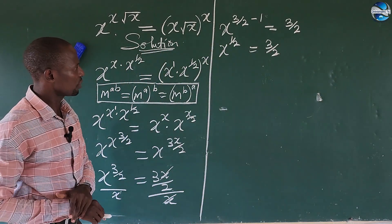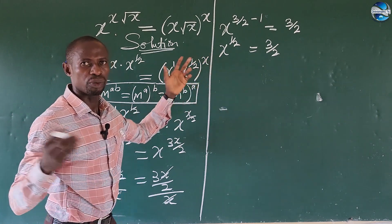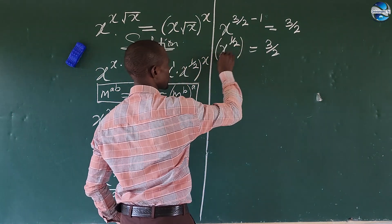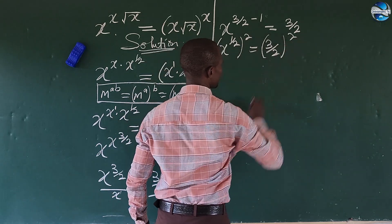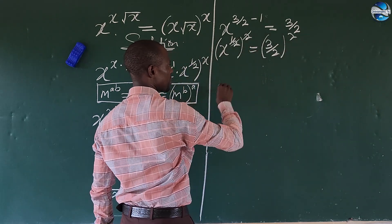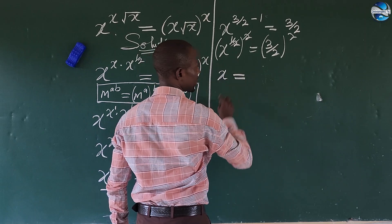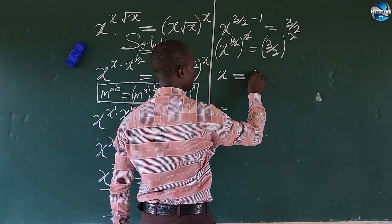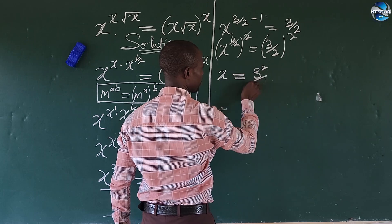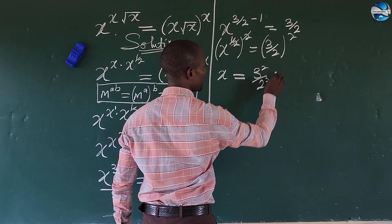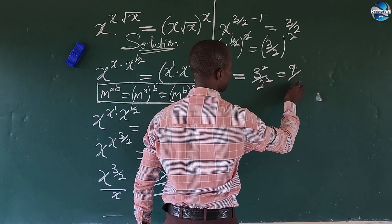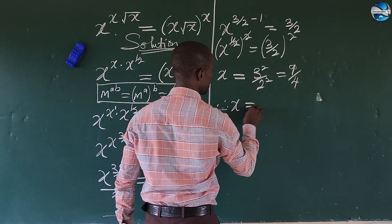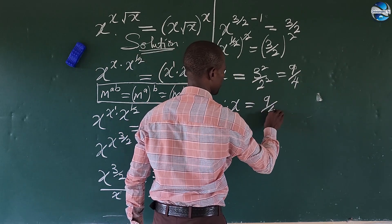So x to the power of 1 over 2 is equal to 3 over 2. We are looking for x, so we will take the square of both sides. Squaring both sides, x equals 3 squared over 2 squared, which is equal to 9 over 4. Therefore x is equal to 9 over 4.